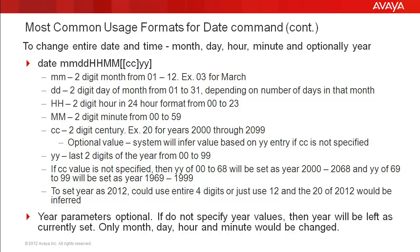If no century digits are entered, a year value from 00 to 68 will be set as 2000 to 2068. A year value of 69 to 99 will be set as 1969 to 1999. This means there are two ways to set the year as 2012: enter the entire four digits of 2012, or skip the century value and enter 12, and the system will infer the century as 20 and set the year as 2012. Both year parameters are optional; if no values are specified for the year, it will be left as currently set, and only the month, day, hour, and minute would be changed.